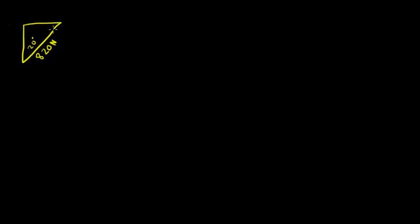As the first step, we have an 820 newton force at 20 degrees from the vertical, and we want to find its vertical and horizontal components. To do so, we'll use sine or cosine. The cheat I always use is SOHCAHTOA: sine equals opposite over hypotenuse, cosine equals adjacent over hypotenuse, and tangent equals the opposite side over the adjacent side.